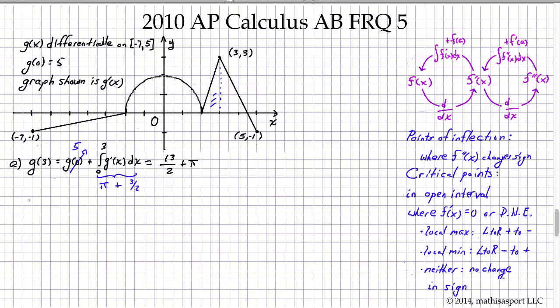g of negative 2 works similarly. It's g at the place that we know, plus the integral from 0 to negative 2 of g prime of x dx, which is just the signed area under the g prime curve. g of 0, of course, is still 5, but we are traversing this interval from 0 down to negative 2. And so, signed areas are reversed.